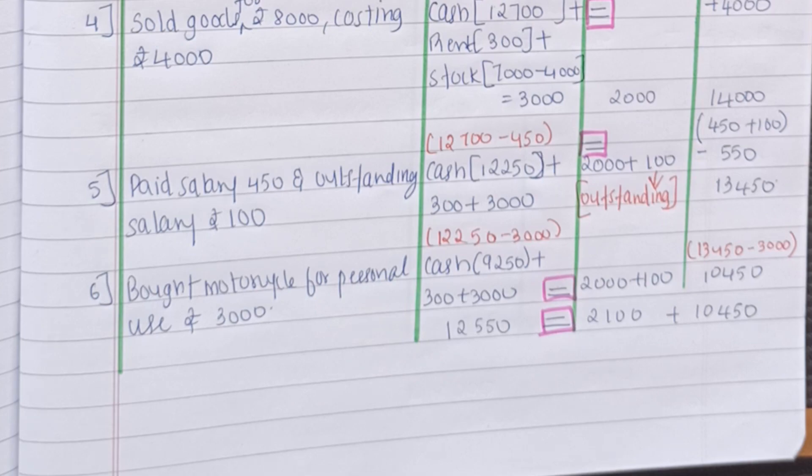Then this will not have any effect on the liability side. Moving on to the capital side we had capital of Rs.13450. From this we need to deduct Rs.3000 for drawings and the balance that remains is Rs.10450. So when we see that asset side is Rs.12550. And liabilities plus capital that is Rs.2100 plus Rs.10450 will be equal to Rs.12550. So hence our asset side is equal to the liability plus capital. So this is how we are supposed to solve the accounting equations.